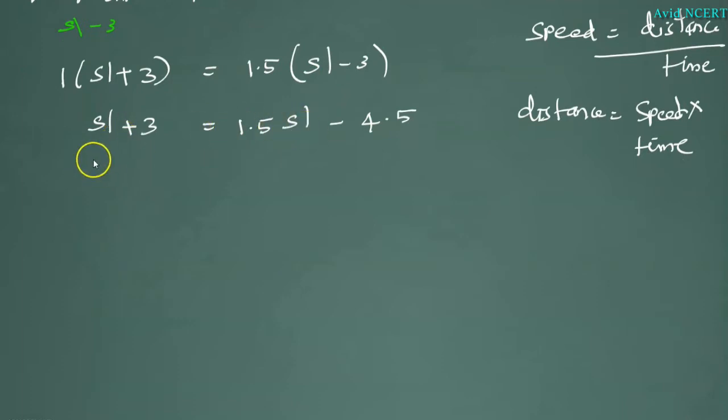Grouping SL together which is 1.5 SL minus this SL goes this side, which equals 3 plus this minus 4.5 comes this side and it becomes as plus 4.5. 1.5 minus 1 SL is 0.5 SL equals 3 plus 4.5 is 7.5.